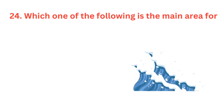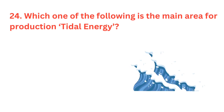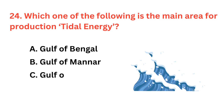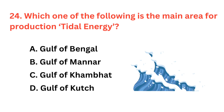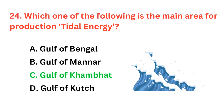Which one of the following is the main area for production of tidal energy? The correct answer is option C, Gulf of Khambhat.